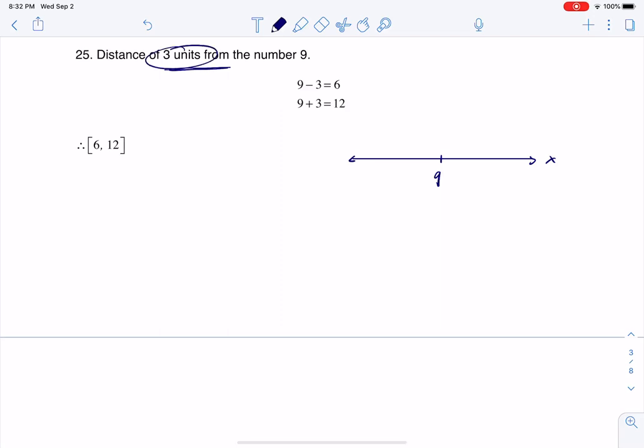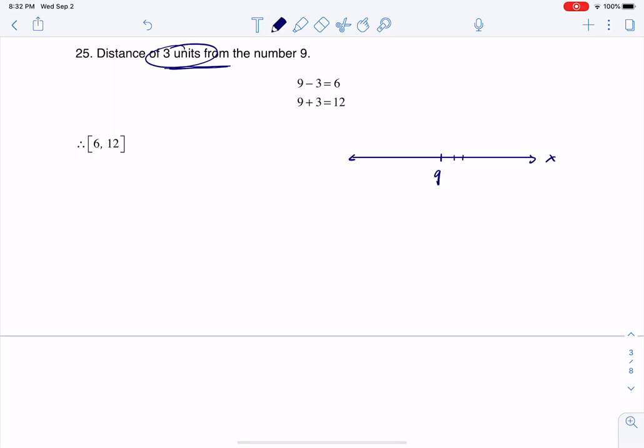Right, and if I wanted to go three units away, I could go up one, two, three to 12 units, and I could go down one, two, three to six units. That's it, that's all they're looking for.